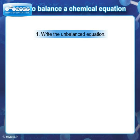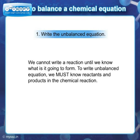Step 1: Write the unbalanced equation. We cannot write a reaction until we know what it is going to form. To write the unbalanced equation, we must know the reactants and products in the chemical reaction.